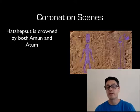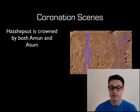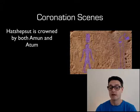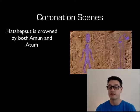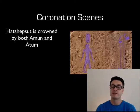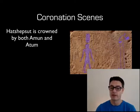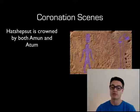The next scenes are the coronation scenes. In a simple scene, we have Hatshepsut crowned by both Amun and another god called Atum. The fact that Amun is crowning Hatshepsut indicates that it is his desire and his wish that this should happen. Located in the same area of the middle colonnade at Deir el-Bahari, this is another indication that Hatshepsut's reign is the will of the god Amun.